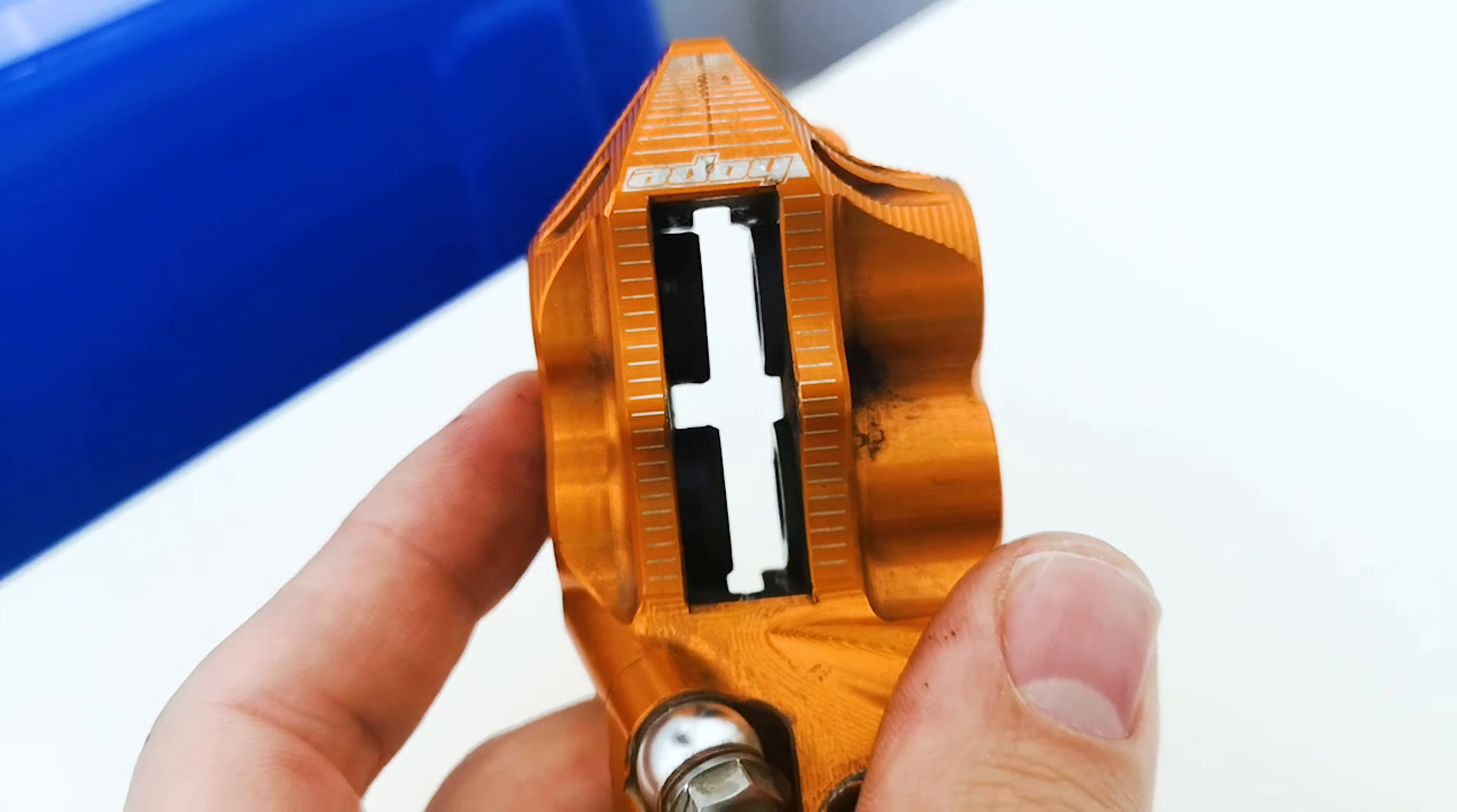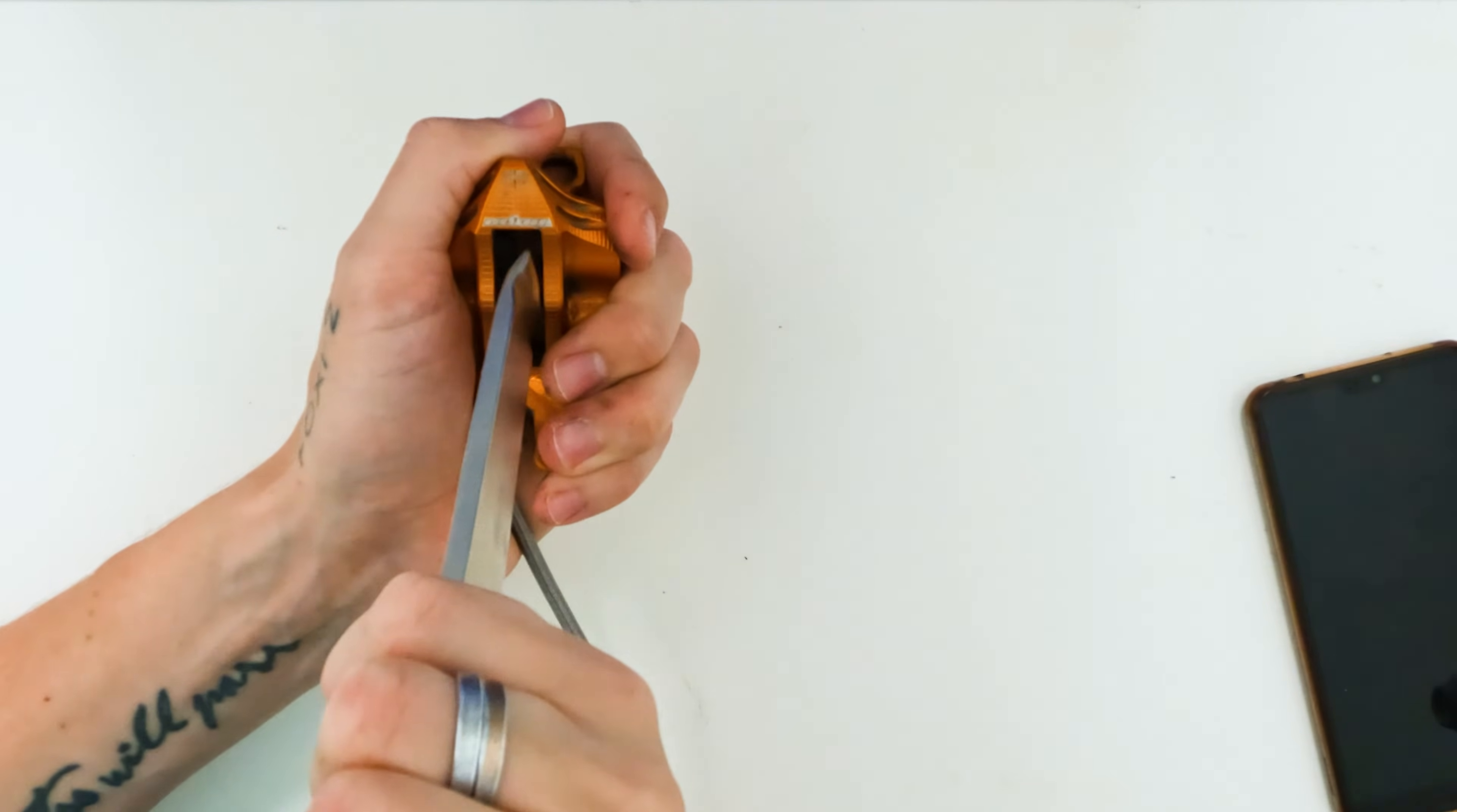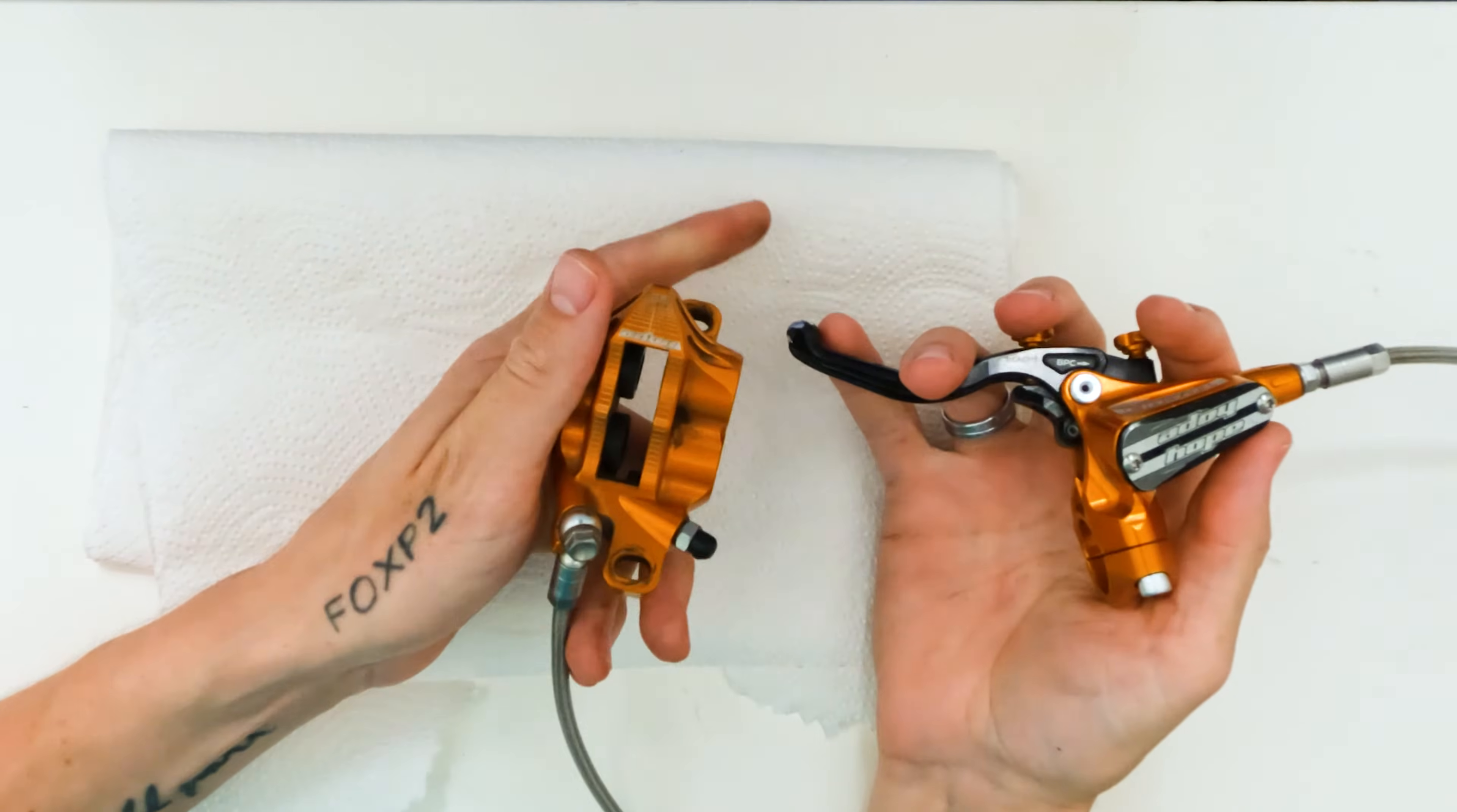Okay, so here we can see the pistons are pushed out. And now we're going to actually push them all the way out to loosen from the actual caliper. Push in the other side first. I'm going to put a bit of paper towel here just because this is probably going to get a bit messy. Now we're just going to pump this again until the pistons actually come out.